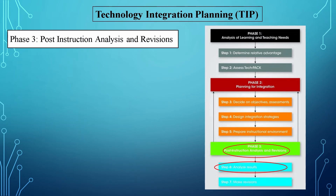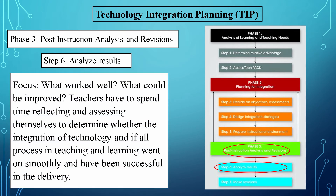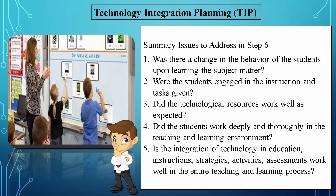Phase 3: Post Instruction Analysis and Revisions. Step 6: Analyze Results. Focus: What worked well? What could be improved? Teachers have to spend time reflecting and assessing themselves to determine whether the integration of technology and all processes in teaching and learning went smoothly and were successful. Summary of issues to address in Step 6: 1. Was there a change in the behavior of students upon learning the subject matter? 2. Were students engaged in the instruction and tasks given? 3. Did the technological resources work well as expected? 4. Did students work deeply and thoroughly in the teaching and learning environment? 5. Did the integration of technology — instructions, strategies, activities, assessments — work well in the entire teaching and learning process?